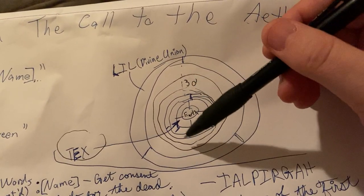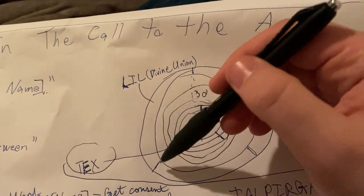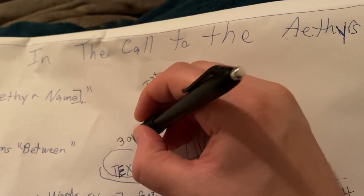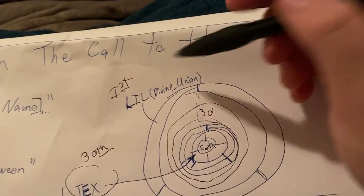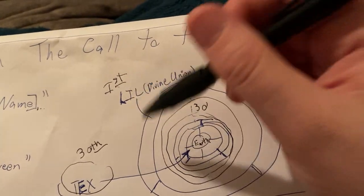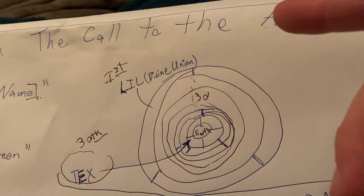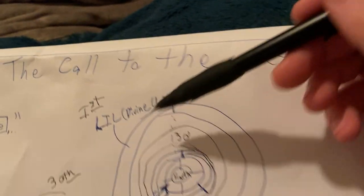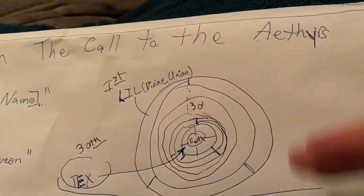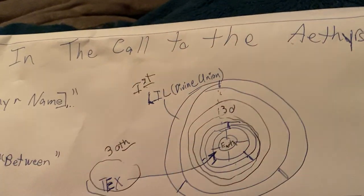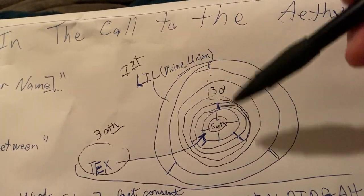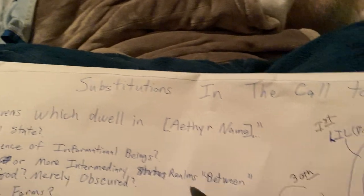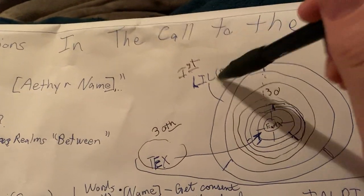There are 30 of these in all. You get all of these done, and eventually you get all the way up to the first aether of Lil — Tex is the 30th. The first aether of Lil is where you can have the experience of divine union. That's not something to take lightly; it's something to respect and honor. In order to have these experiences of the different aethers — these subdivisions of heaven — you make this call to the aethers. You say 'O you heavens which dwell in Tex,' or 'O you heavens which dwell in Lil,' except you're doing all of this in Enochian.